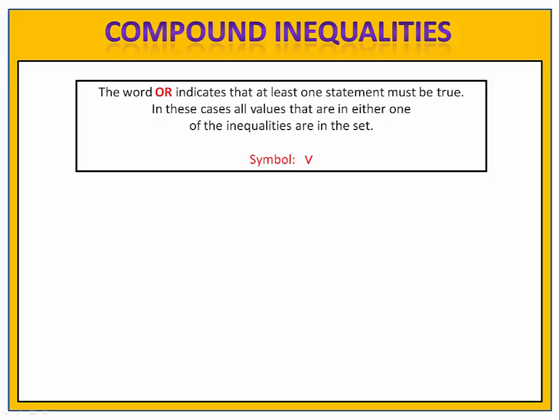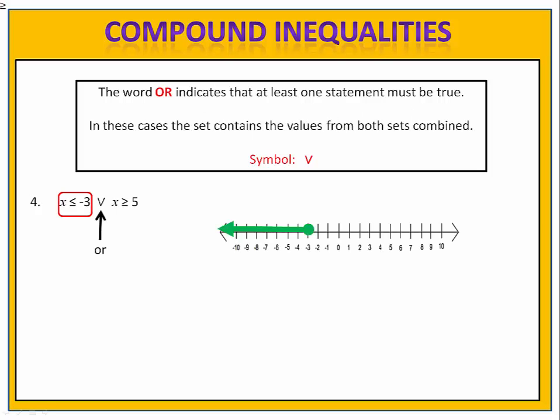Now that we have inequalities involving the word and figured out, we need to consider the word or. The word or indicates that at least one of the statements must be true — the values are in one of the inequalities or in the other. Consider example four: x is less than or equal to negative three or x is greater than or equal to five. We graph the first inequality, x is less than or equal to negative three, then the second, x is greater than or equal to five. Putting these together, we have the complete compound inequality. With or, you simply graph both of them. As long as your values are in one of the inequalities or in the other, it's in the compound inequality.